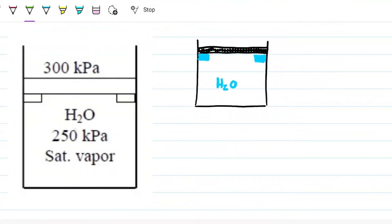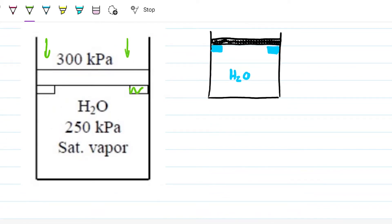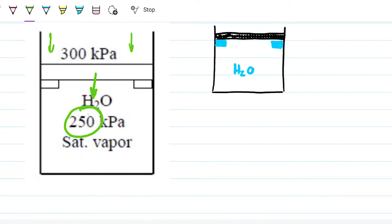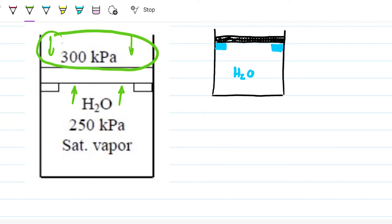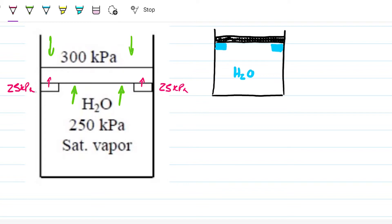So what's going on here: we have water inside the container at 250 kilopascals, and on the outside we have 300 kilopascals pushing downwards. In a normal situation without stops, the piston would lower until the pressure inside increased to 300 and equilibrium was reached. However, because we do have the stops, the water is pushing upwards at 250 and being pushed down at 300, so the stops carry the difference — about 50 kilopascals split between them.